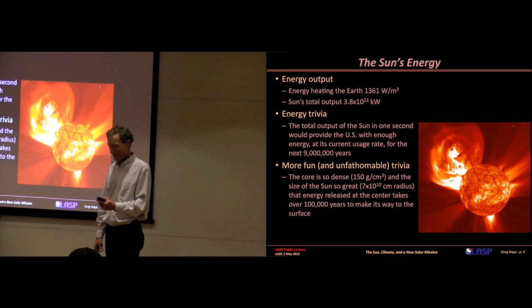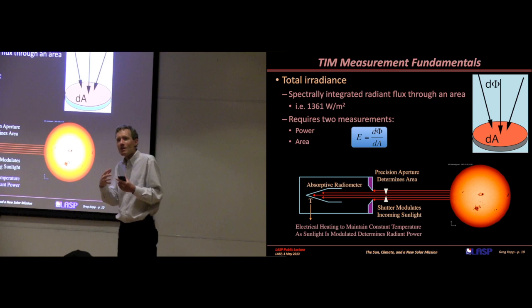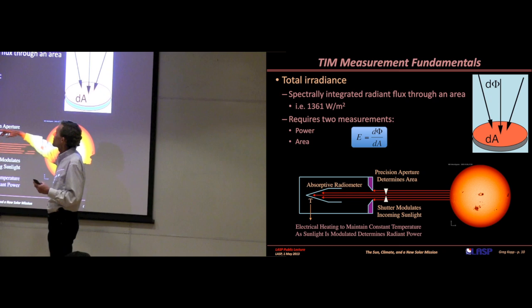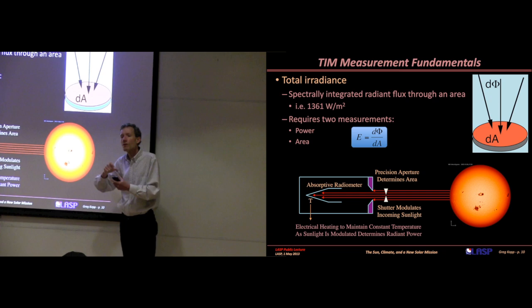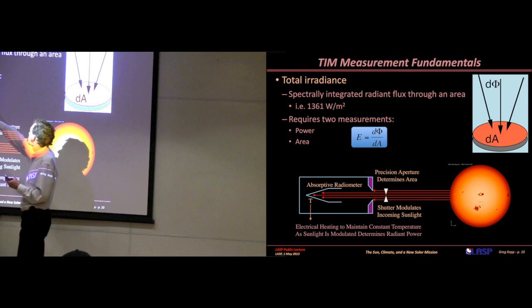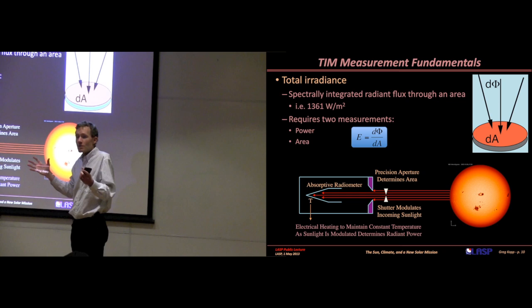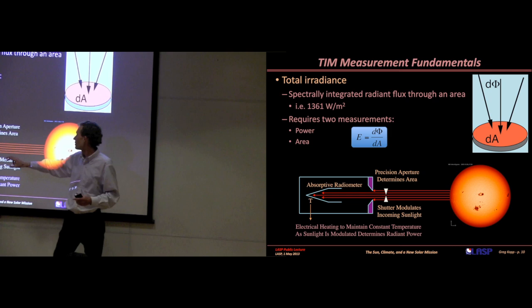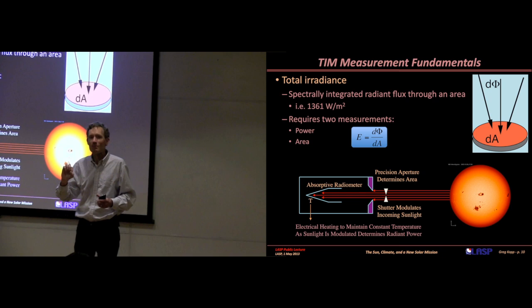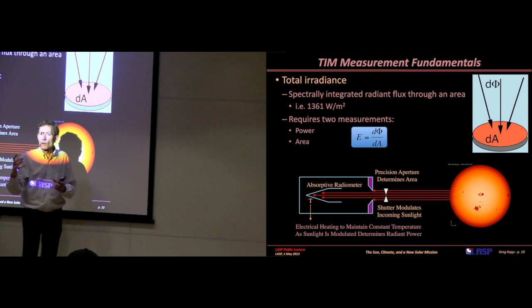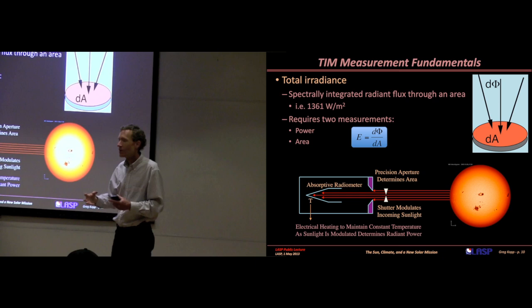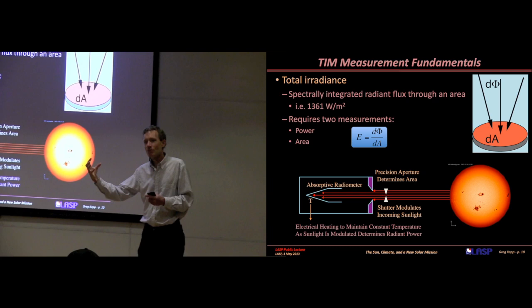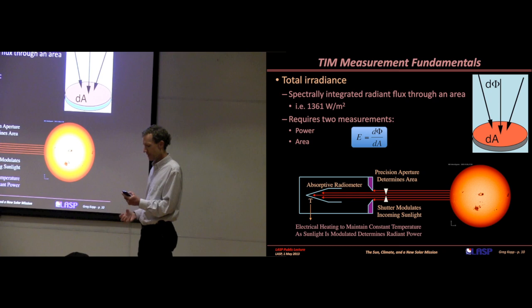How do we measure that? We want to measure the total amount of radiant energy coming from the sun at all different wavelengths. You're looking for how much energy is going through a certain area in a given amount of time. That's your radiance. It requires two measures: one of power and one of area. Conceptually very simple. We collect a certain amount of energy. We have a really well-made precision aperture that defines the area, and we put an absorptive black radiometer inside that measures power. The ratio gives us our irradiance.